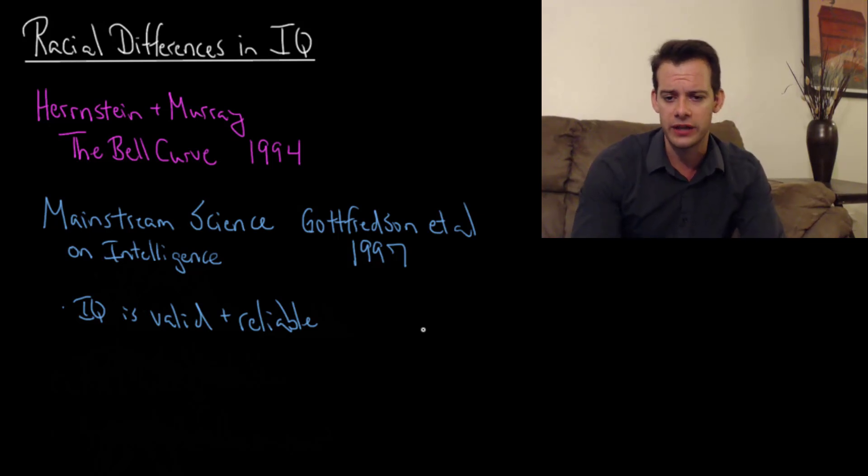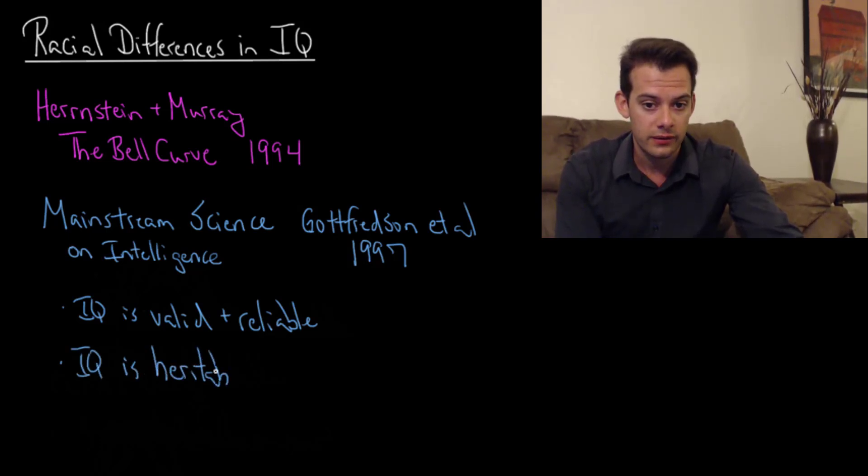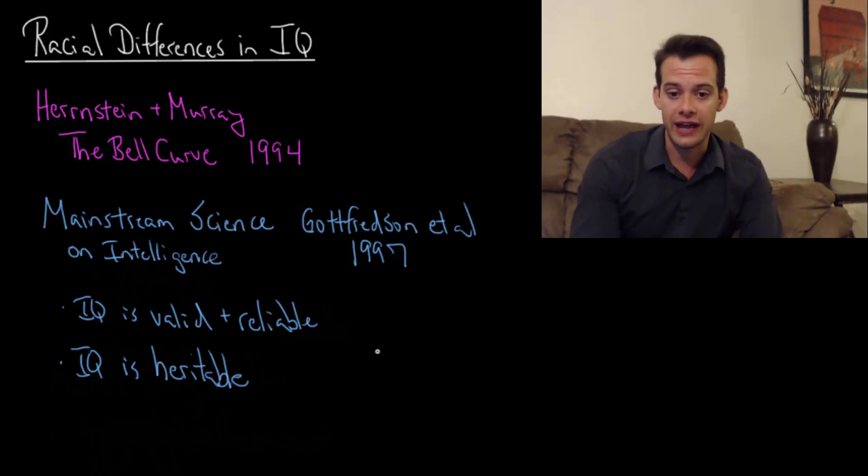If you don't believe in the concept of IQ, then you really can't believe in any concept in psychology. IQ is a valid construct, it is reliable, and it does predict future outcomes. Not only that, it's been shown to be heritable. People have different IQs and part of the reason for these differences is that people have different genes. In The Bell Curve, Hernstein and Murray say that a reasonable estimate is around 0.6, which is essentially what we've seen in the previous video on heritability of IQ, that it ranges somewhere between 0.4 and 0.8.